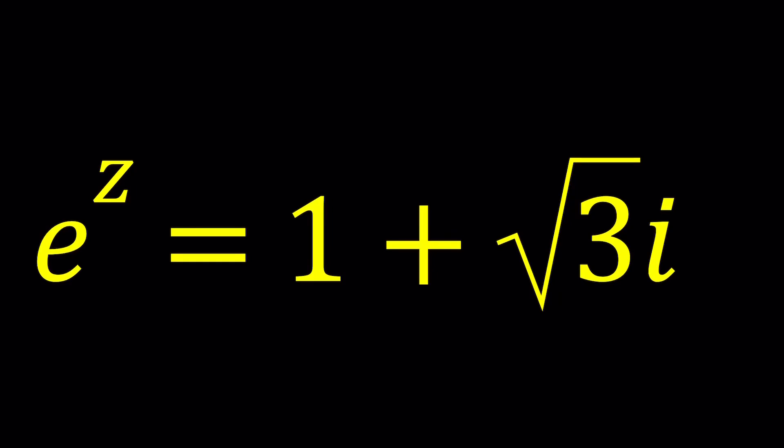Hello everyone, welcome to a plus bi. This channel is all about complex numbers, and in this video we're going to be solving a very nice exponential equation with complex numbers. We have e to the power z equals 1 plus the square root of 3 multiplied by i, and we're going to be solving for z values.